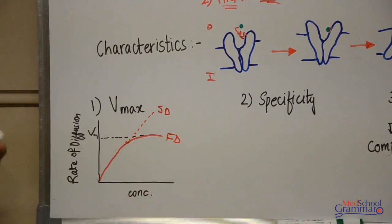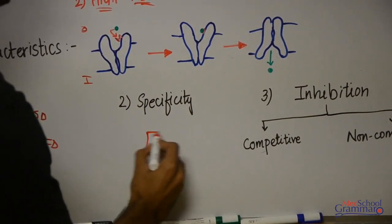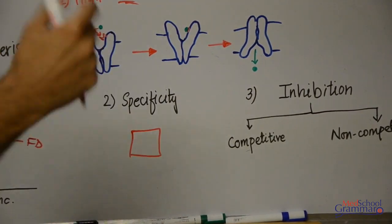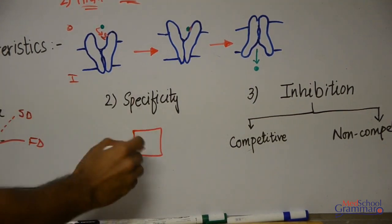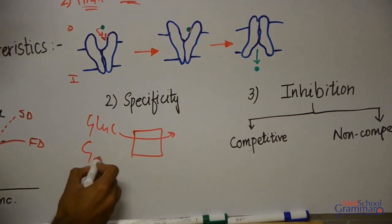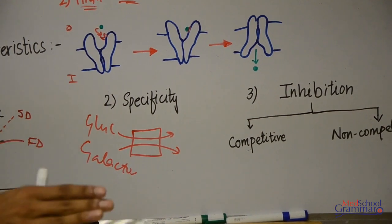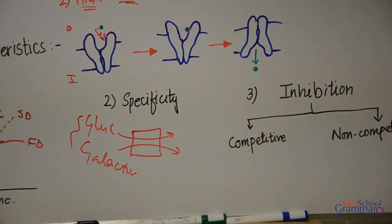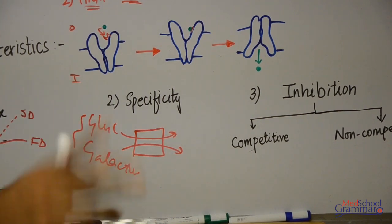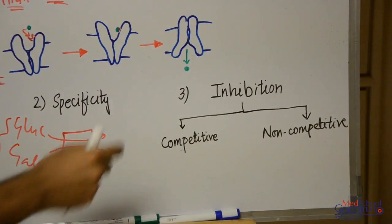Moving to the second property — specificity. This property states that a carrier protein will transfer or diffuse only a particular molecule or group of molecules. For example, a carrier protein for glucose will let glucose pass through, but may also let galactose move through it. So certain carrier proteins are specific for only one molecule, or they may be specific for a group of related molecules. This is what is meant by specificity — they are specific for one molecule or one group of related molecules.